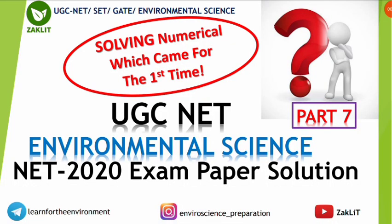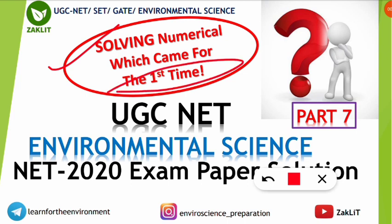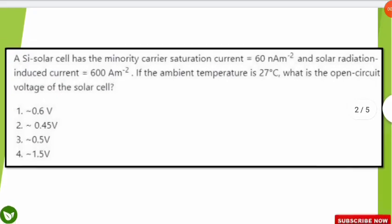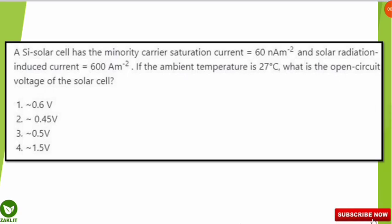Hello everyone and welcome back to Jacklit Educational Channel. This is Part 7 for the UGC NET Environmental Science 2020 exam paper solution discussion. In this video we are going to discuss a numerical which came for the first time in the UGC NET Environmental Science paper. If you haven't checked the previous six parts, you can check the link given in the 'i' button, where we have discussed around 30 questions from this examination.